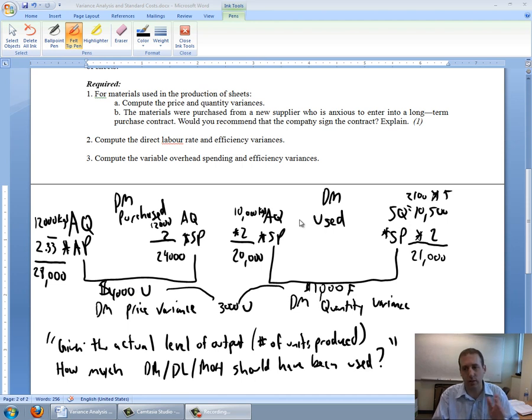For quantity variance, it was actual quantity standard price used times standard quantity allowed standard price used, and it gave us a favorable variance of $1,000.